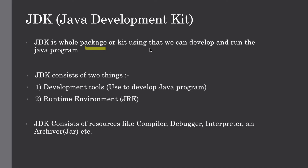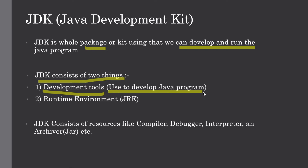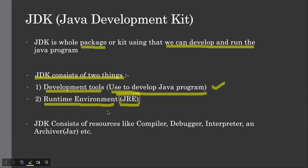JDK is a whole package that we can use to develop and run Java programs. JDK consists of two things: development tools, using which you can write the Java program, and a runtime environment to run the program. JDK consists of resources like the compiler — which compiles Java code and converts it to bytecode — a debugger, an interpreter, and different tools. The debugger shows you the value of a variable at a given line to help understand the program and find errors.